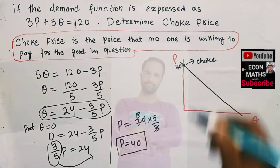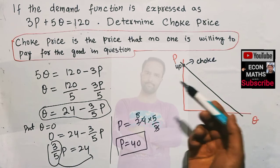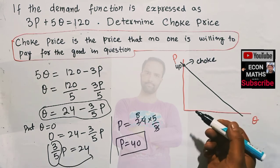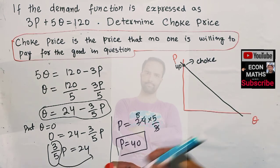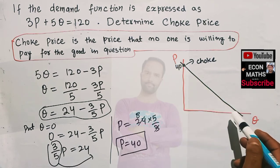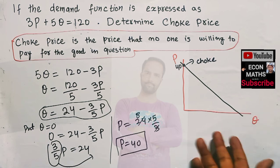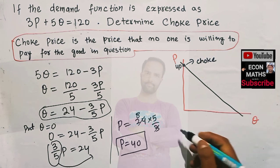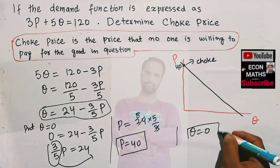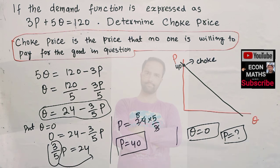To recap: the choke price is the price that no one is willing to pay for the good in question — the price at which quantity demanded equals zero. Graphically, it is where the demand curve intersects the price axis. In this question the choke price is 40. We find it simply by setting quantity demanded equal to zero and solving for P.